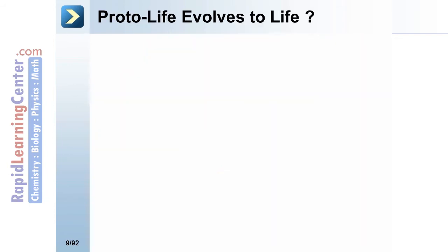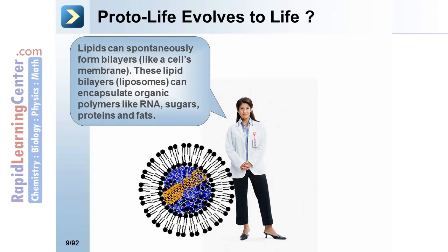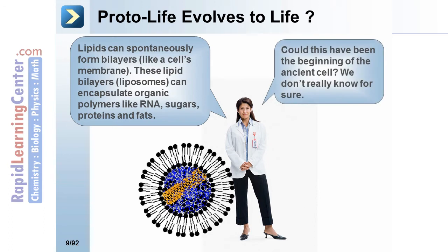As protolife evolved to life, lipids can spontaneously form bilayers like a cell's membrane. These lipid bilayers, sometimes referred to as liposomes, can encapsulate organic polymers like RNAs, sugars, proteins, and fats. Could this have been the beginning of the ancient cell? We don't really know for sure.